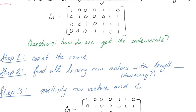Step one to this we have to count the rows. That's easy enough. We can see that the generating matrix has one, two, three, four rows.